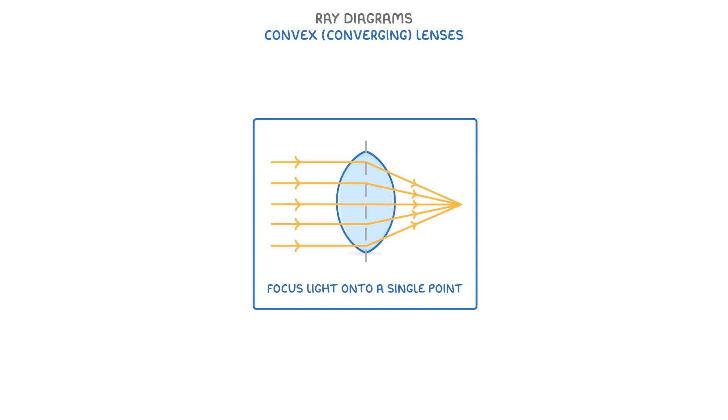The next thing we need to cover is exactly the same stuff, but this time for convex or converging lenses, which focus light onto a single point.